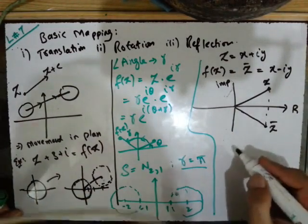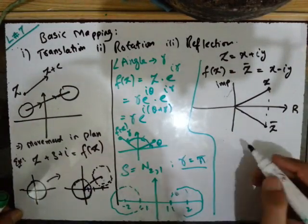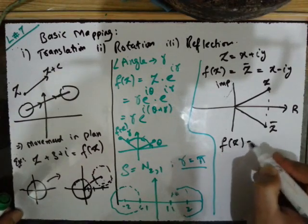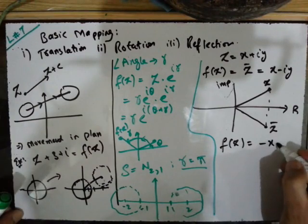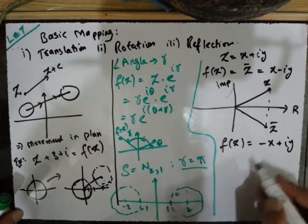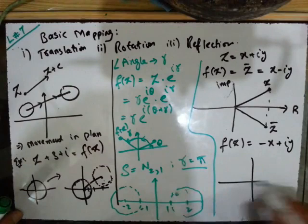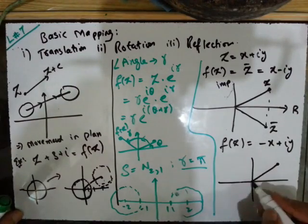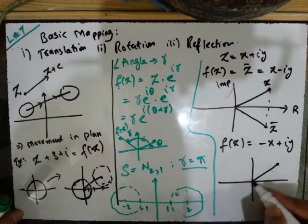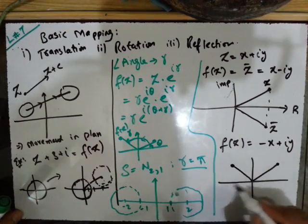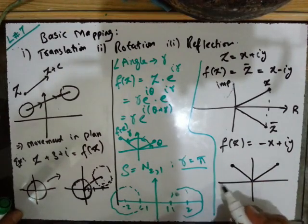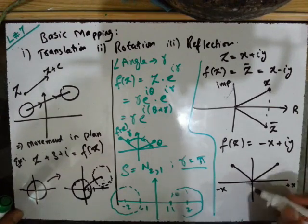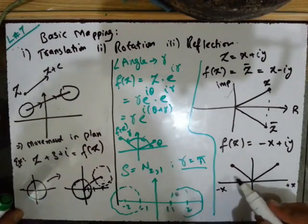If we do reflection along the imaginary axis, then f(z) = −x + iy. Here z = x + iy was in the positive region, and its reflection along the imaginary axis will be at −x on the negative side. The positive imaginary axis is here, and the negative imaginary axis is here — so the reflection appears on that side.